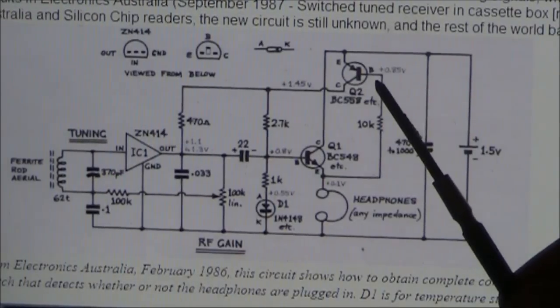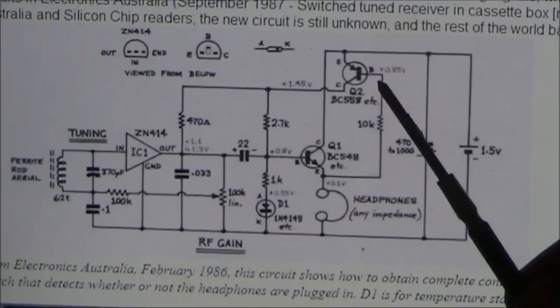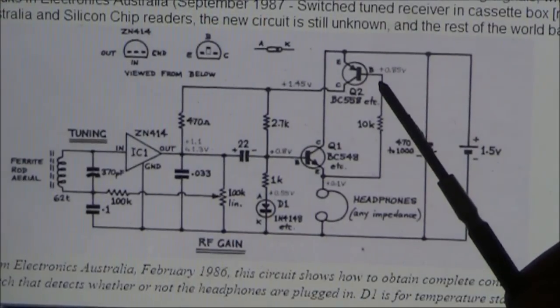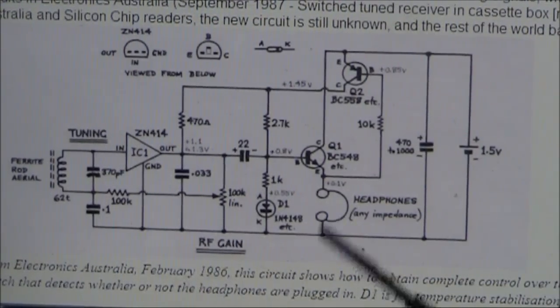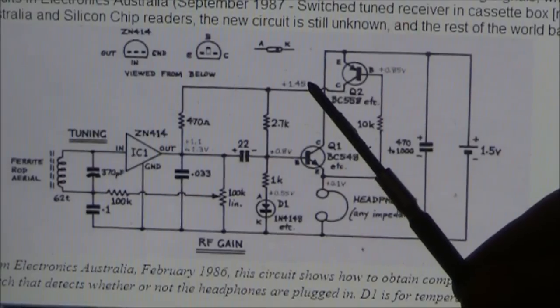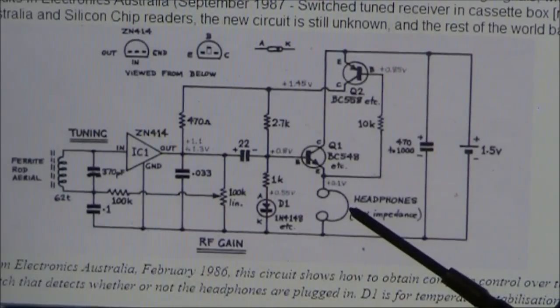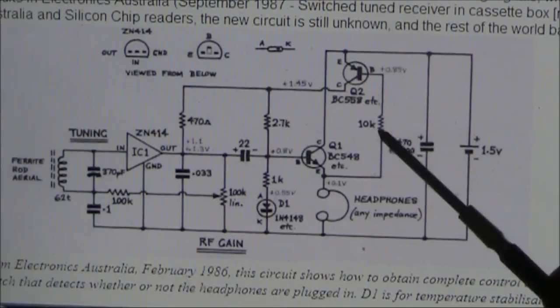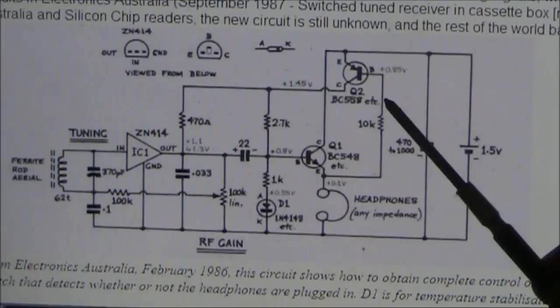The transistor up here is a BC558, and you might be wondering what that does. Its function is actually to turn the receiver on when there's headphones plugged in. You unplug the headphones, and the transistor is switched off, meaning that no current gets to the receiver. That's an ingenious way of switching the radio on and off. Just unplug the headphones and it's off, plug them in and it's on. The cost of a transistor and a resistor is a lot cheaper than a switch, and it also uses less space as well.